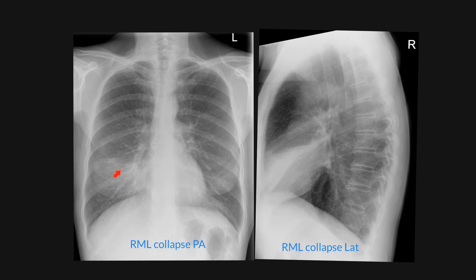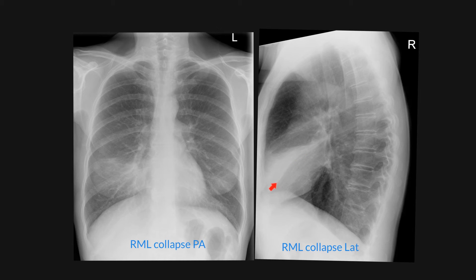This is a patient who has got right middle lobe collapse. You can see that the right heart border is obscured, and there is increased density over the right midzone. The lateral clearly demonstrates that the horizontal fissure and the oblique fissure on the right side have come together, and the triangular density here is the collapse of the middle lobe.